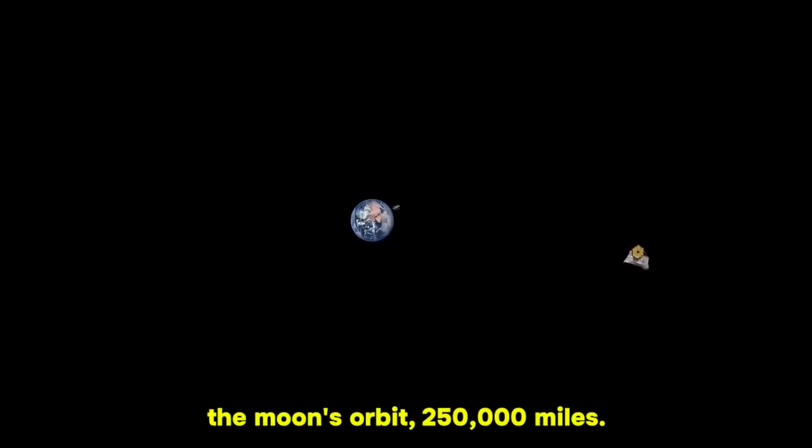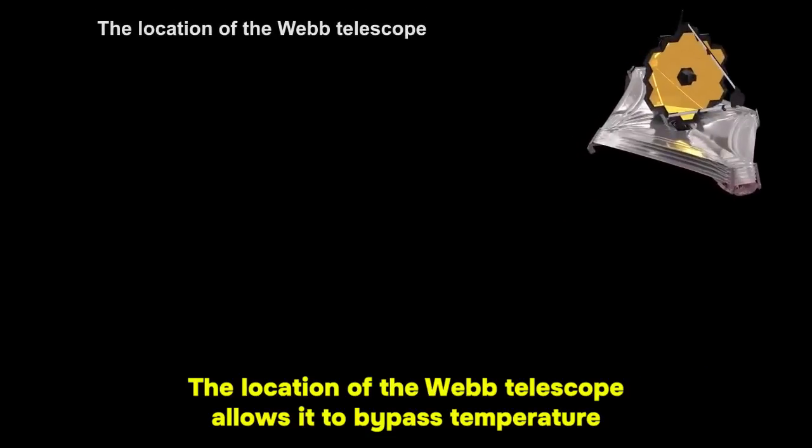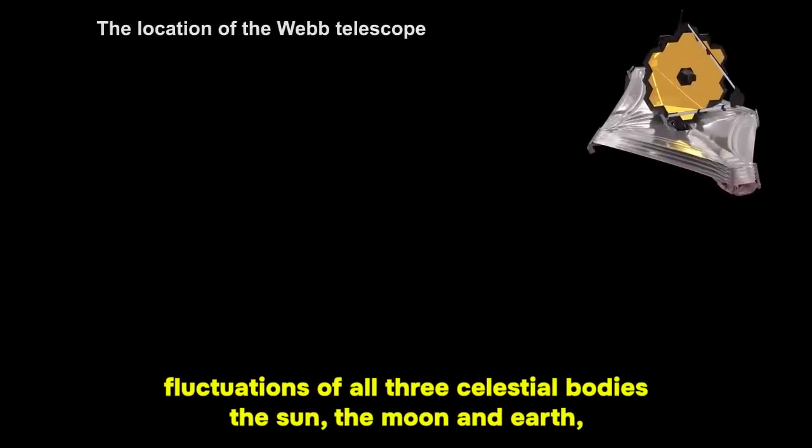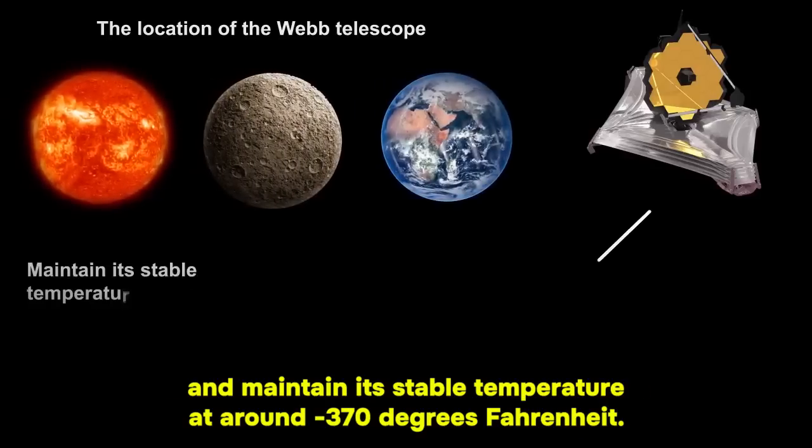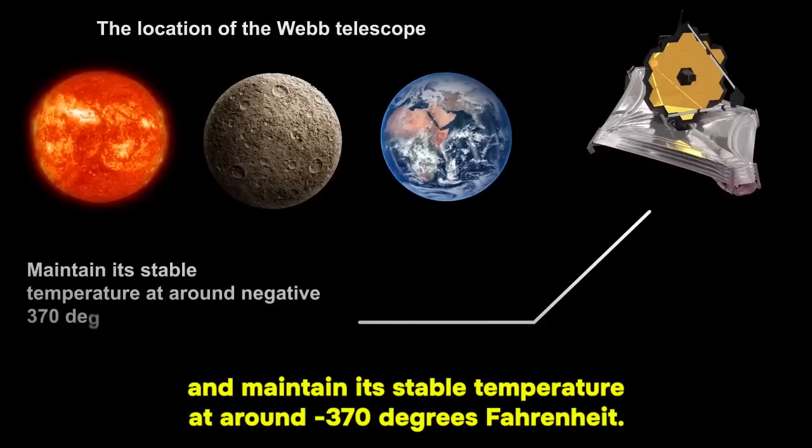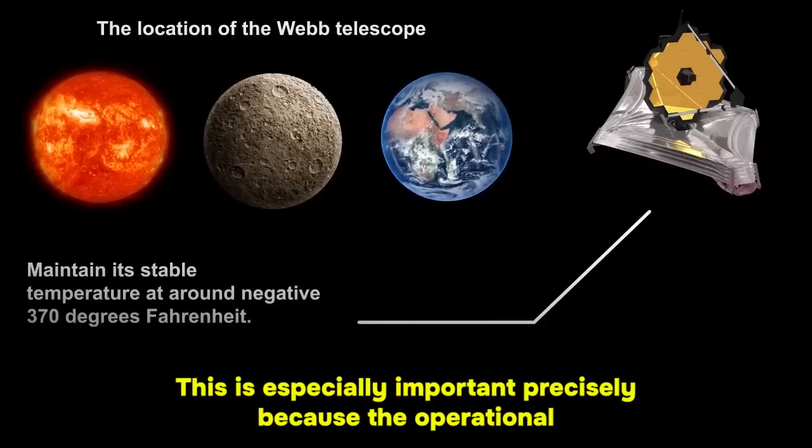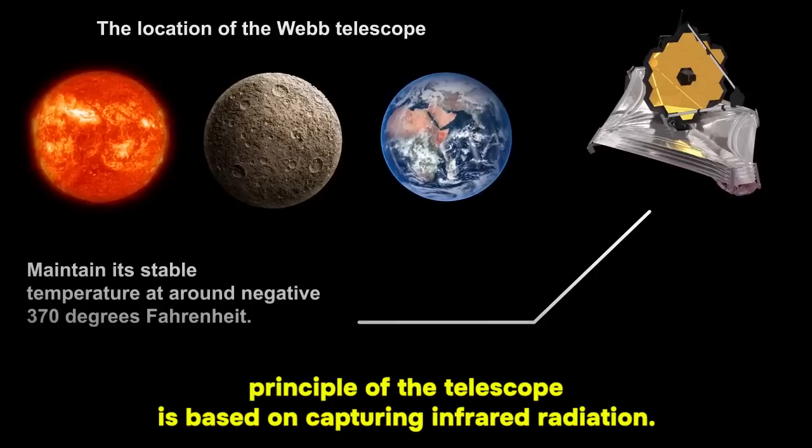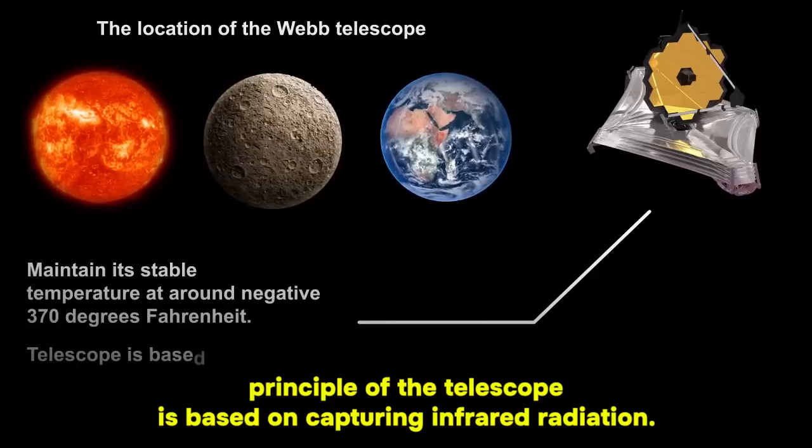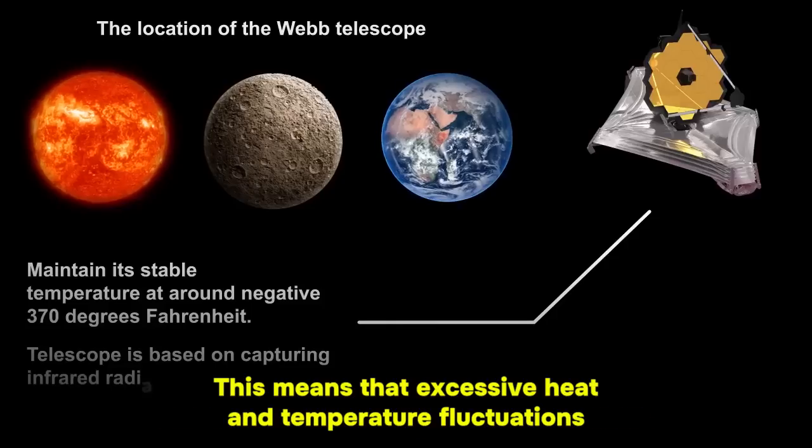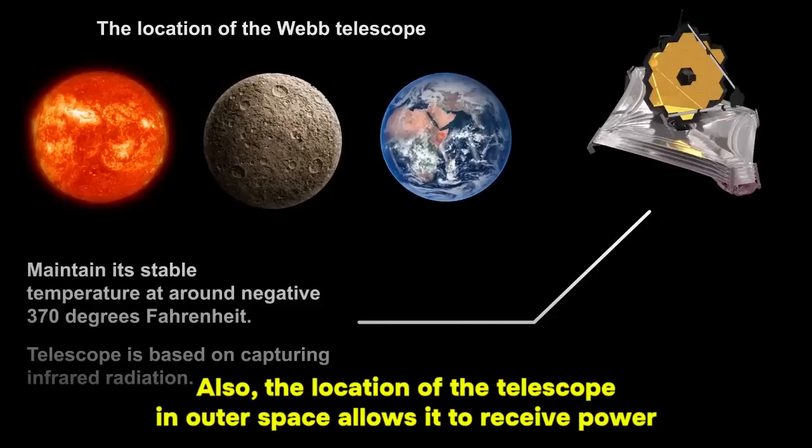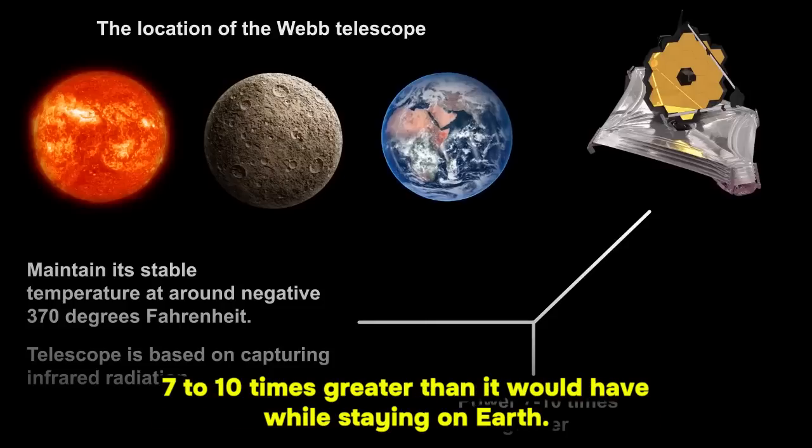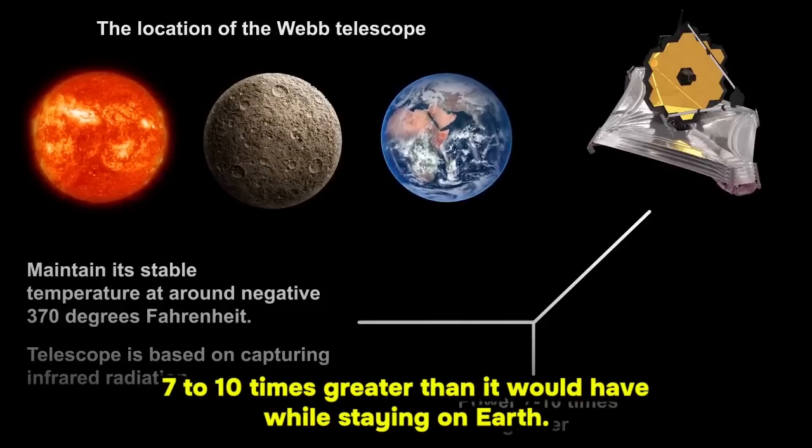The location of the Webb Telescope allows it to bypass temperature fluctuations of all three celestial bodies, the Sun, the Moon, and Earth, and maintain its stable temperature at around negative 370 degrees Fahrenheit. This is especially important because the operational principle of the telescope is based on capturing infrared radiation. This means that excessive heat and temperature fluctuations would interfere with its function. Also, the location of the telescope in outer space allows it to receive power 7 to 10 times greater than it would have while staying on Earth.